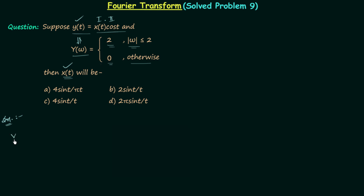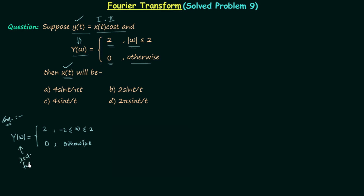The Fourier transform Y(ω) is equal to 2 when |ω| ≤ 2, or equivalently when ω is greater than or equal to −2 but less than or equal to 2, and it is equal to 0 for other values of frequency ω. From this definition it is clear that the Fourier transform is a rectangular function — equal to 2 between −2 and 2, and 0 otherwise.